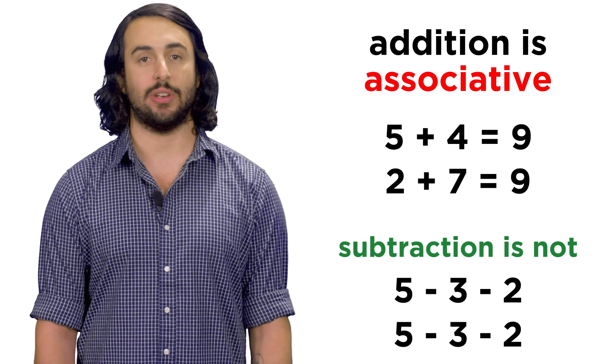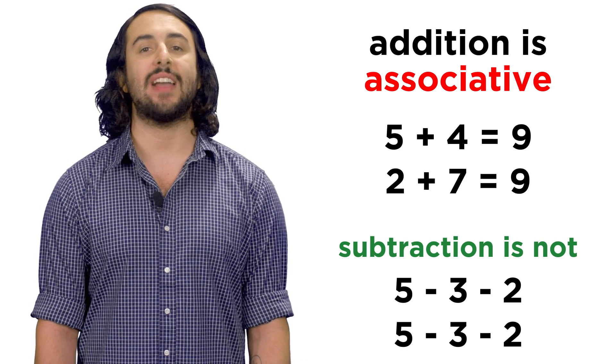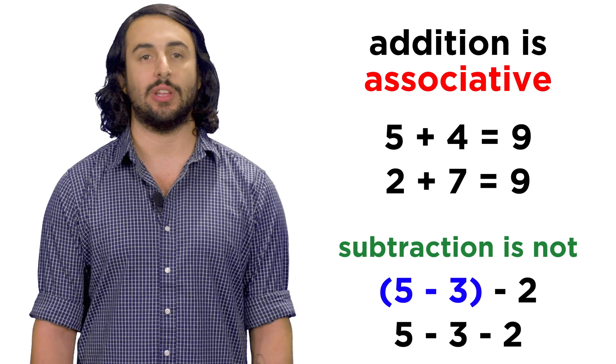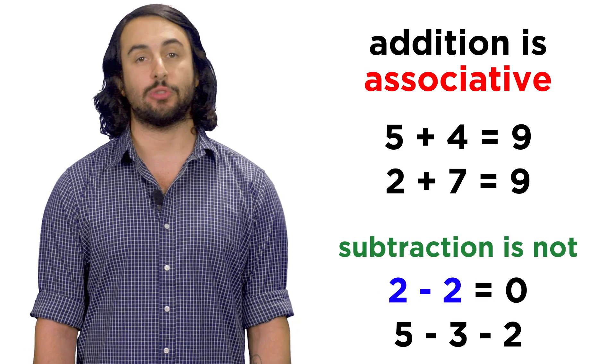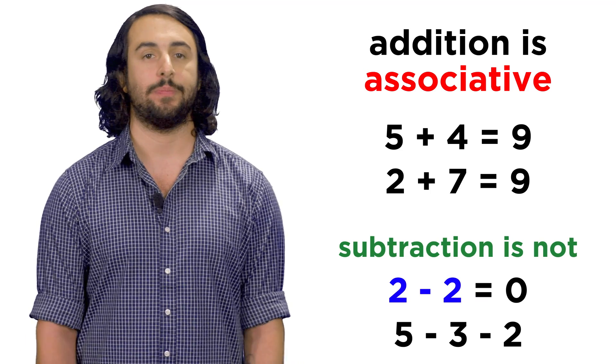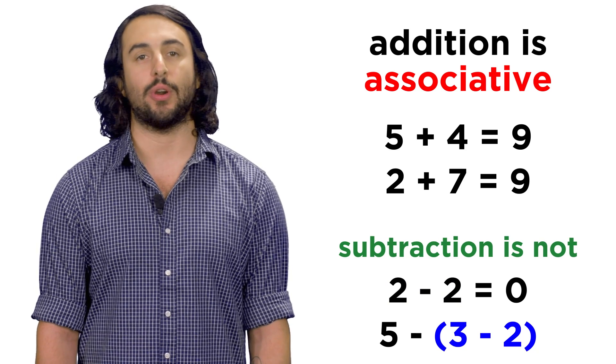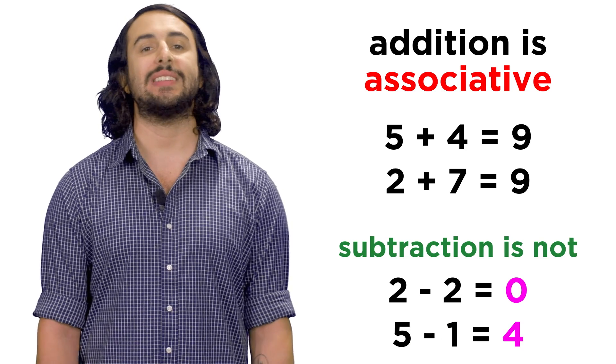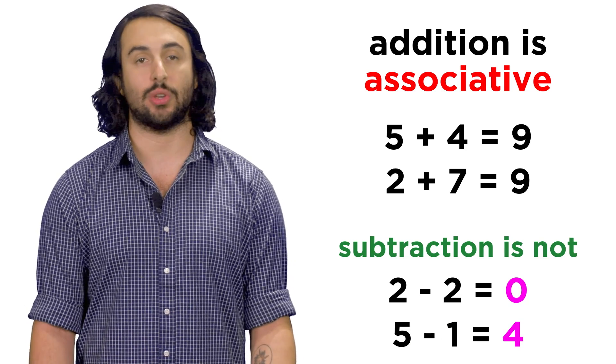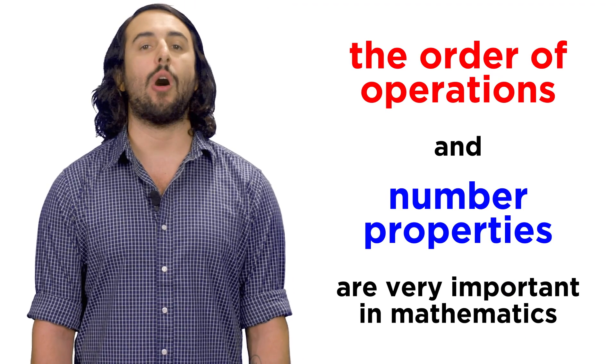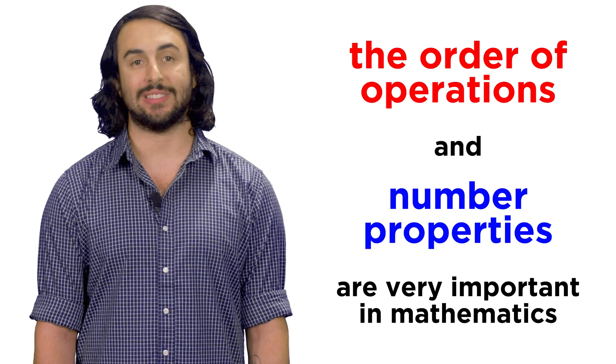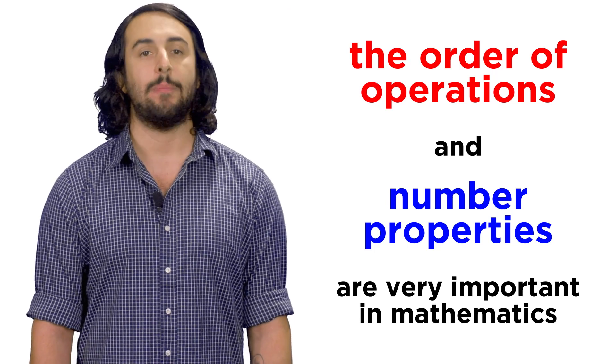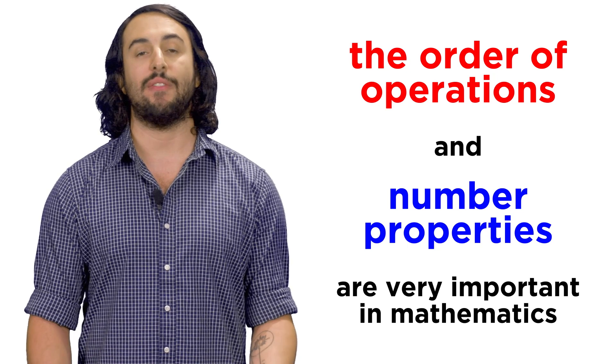Subtraction is not associative. If we write down five minus three minus two, we could do five minus three first, that gives us two, and subtracting the other two, we get zero. If instead we do the three minus two first, we get one, and five minus one is four. So we can see that subtraction is not associative. We will learn all about the order of operations later, as well as other ways in which these kinds of properties become less obvious, yet very important.